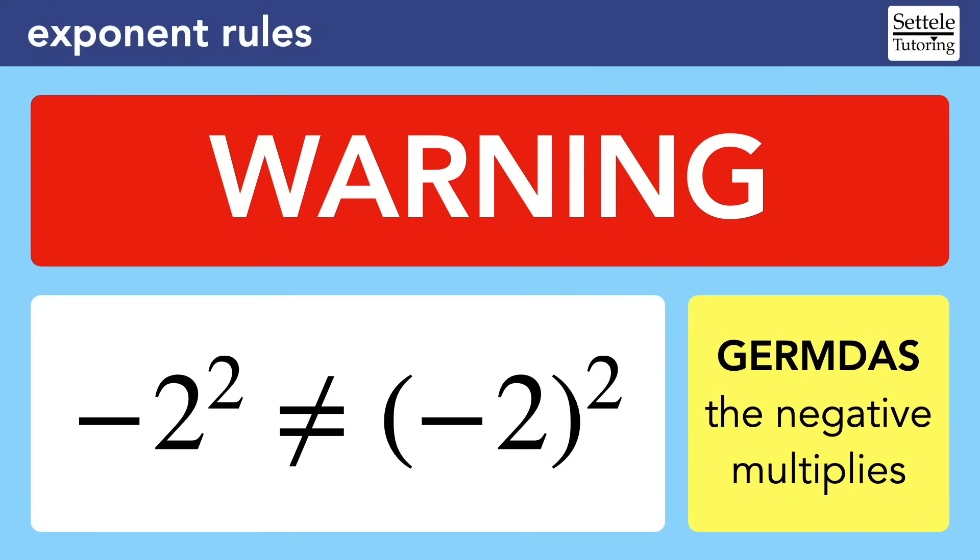The calculator resolves the exponent first, then it treats the negative as multiplication. So the first version of negative 2 squared will be shown as negative 4. If we put the negative 2 in parentheses, the calculator treats this as a grouping, so the exponent applies to both parts, giving us the value that we would expect, which is positive 4.